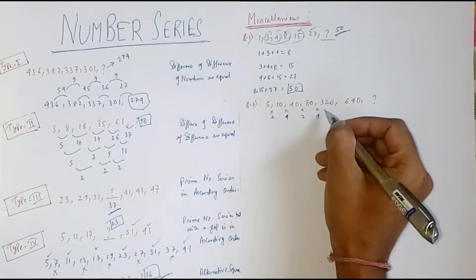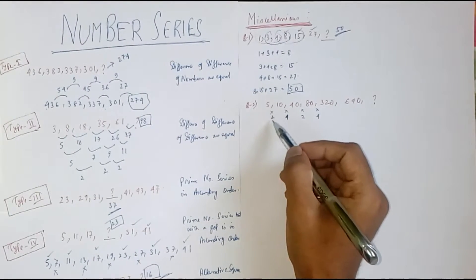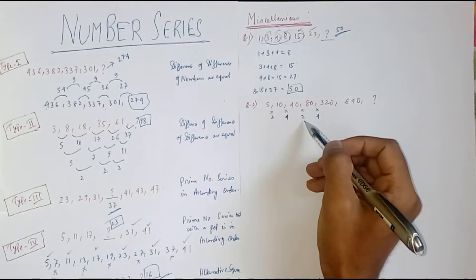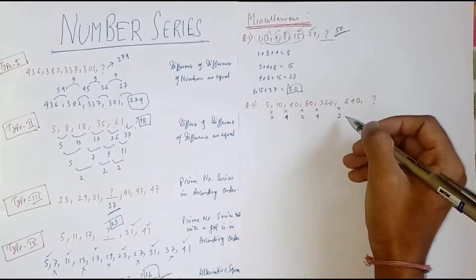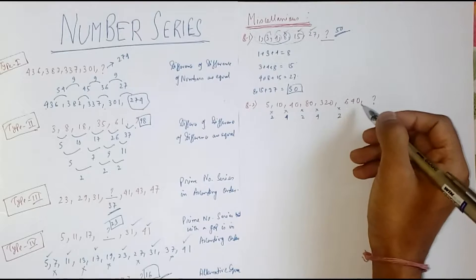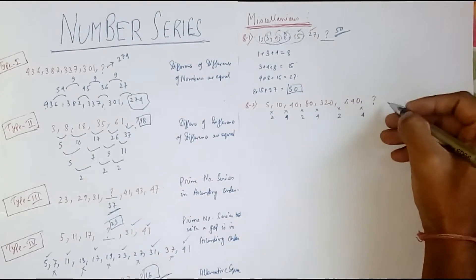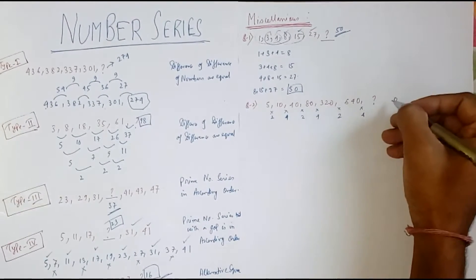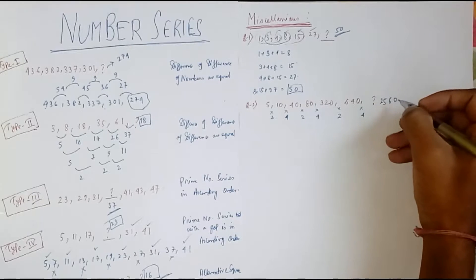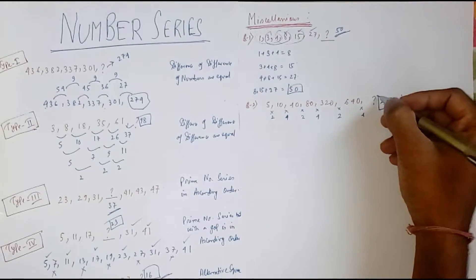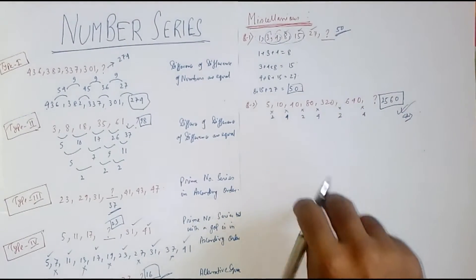And 80 multiplied by 4 makes 320. So the pattern alternates between multiplying by 2 and multiplying by 4. Therefore 640 multiplied by 4 gives 16 carry 1, then 6 into 4 = 24 plus 1 = 25, making 2560. So 2560 is the missing number.